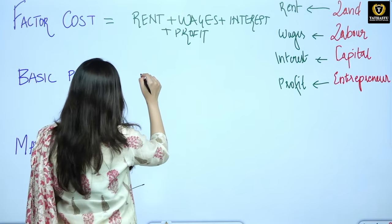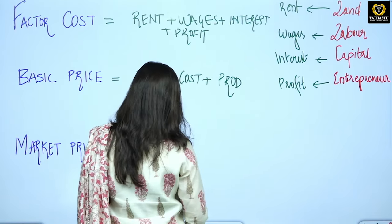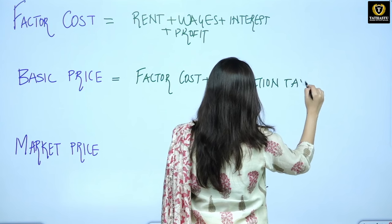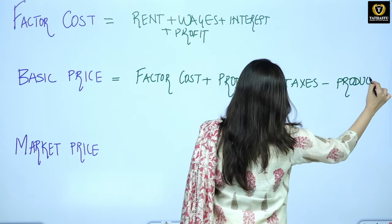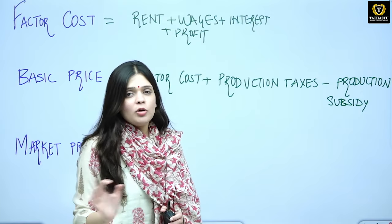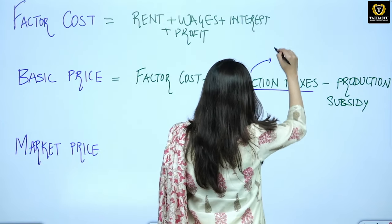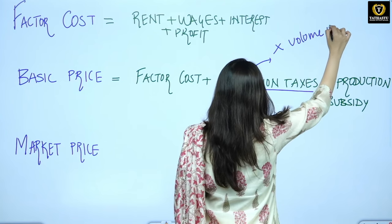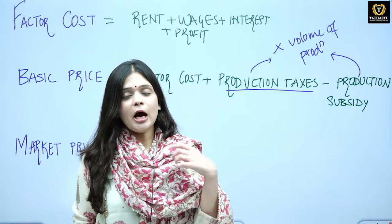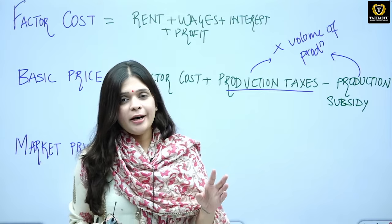Basic price is the price that the actual producer gets. It is factor cost plus production taxes minus production subsidy. Subsidy is subtracted because that is not a cost you are actually incurring — it is a benefit you have received from the government. Production taxes are those which do not depend upon the volume of production, meaning even if you produce zero, you still have to pay the tax and still receive the subsidy.